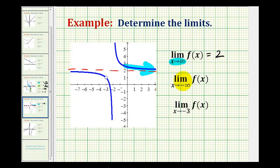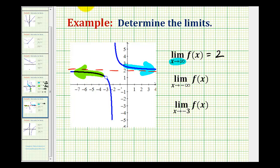For the second limit, we have the limit as x approaches negative infinity of f of x, which means we're now on the function moving to the left as x approaches negative infinity. And as we move to the left, notice how the function is approaching the horizontal asymptote, and therefore the function value is approaching positive two in this direction as well. So the limit as x approaches negative infinity of f of x is equal to positive two.